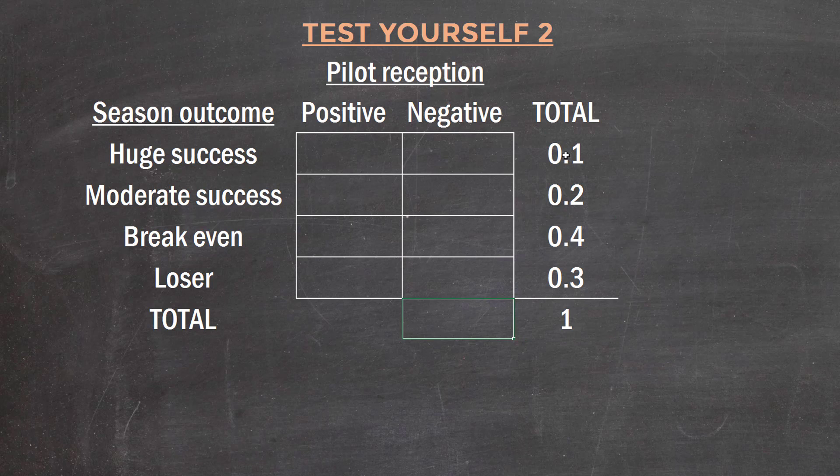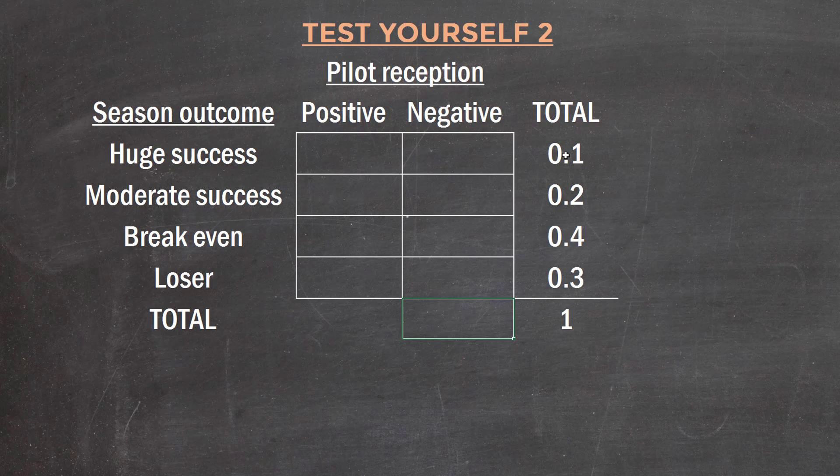Now the next piece of information says that 99% of huge successes had a positive pilot reception. So in here it's going to be 99% of the huge successes, so 99% of this 0.1. So here I'm going to write 0.099, so that is 99% of 10% effectively, 99% of 0.1, leaving this cell to be 0.001.